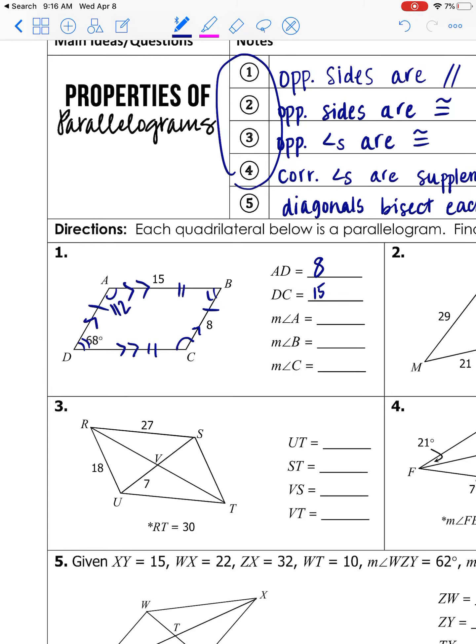And check for reasonableness. Like A is clearly larger than D. So make sure you just didn't make a mistake with the subtraction there. So from there, we can just fill all these in. This is 112. B is opposite of D. So it's 68. C is opposite of A. So it's 112.